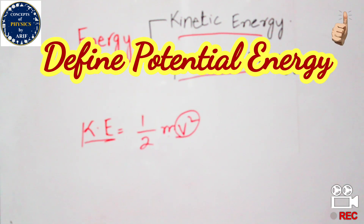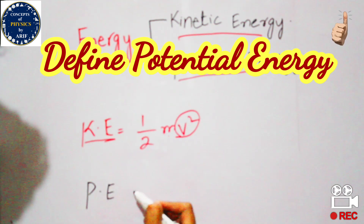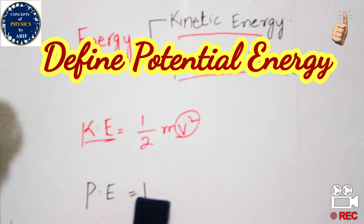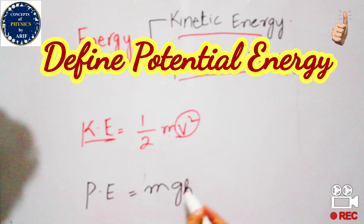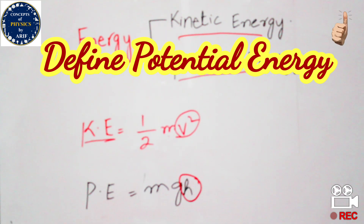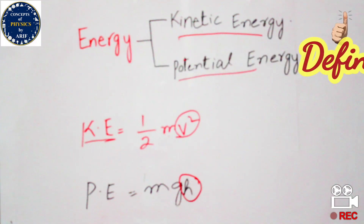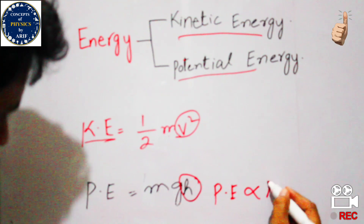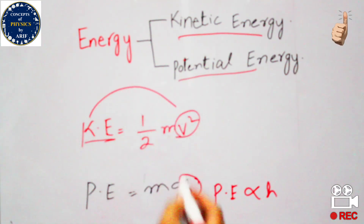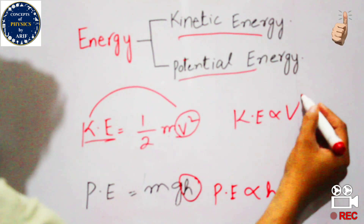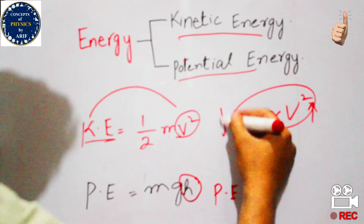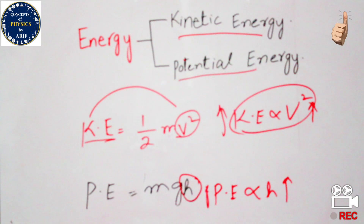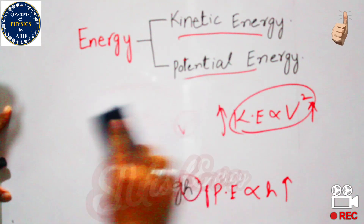Potential energy is defined as the ability of a body to do work due to its position. It is given by mgh, where position is defined by height h. When a body gains height, it gains potential energy. Potential energy is directly proportional to height, while kinetic energy is directly proportional to velocity.